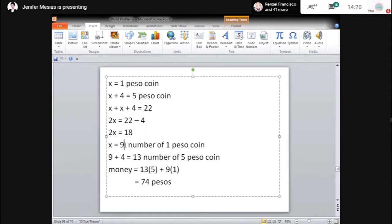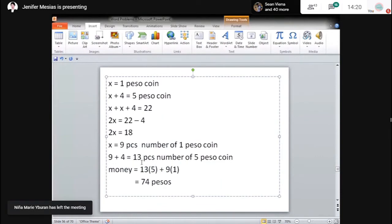So, 9 pieces yung number of 1 peso coin. Then, since ang 5 peso coin is more than 4 lang naman, so add 4, so it will become 13 pieces. So, yung total number nung pera is 22. So, ayan. 9 plus 13 is 22. So, eto, value to. Value to nung pera. So, ang money ay 13 times 5, kasi yung 5 pesos, multiply mo lang sa 13 pieces, plus 1 peso times 9. So, meron siya amount na 74 pesos. Okay?